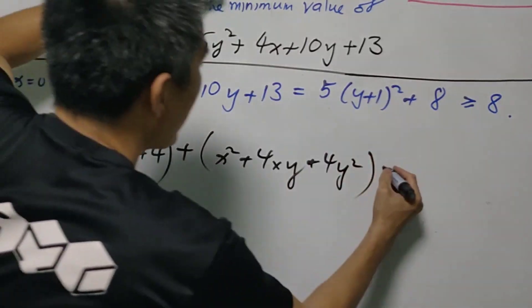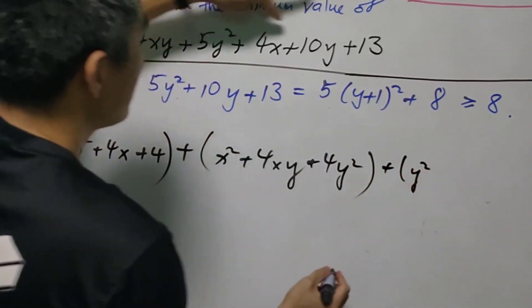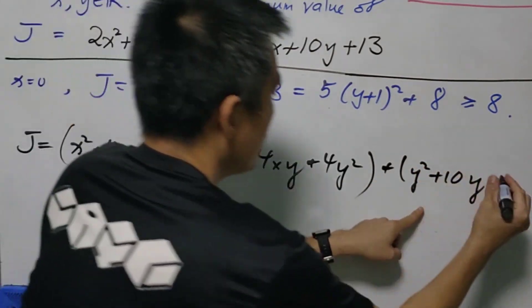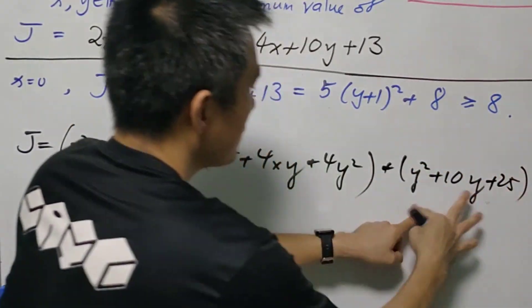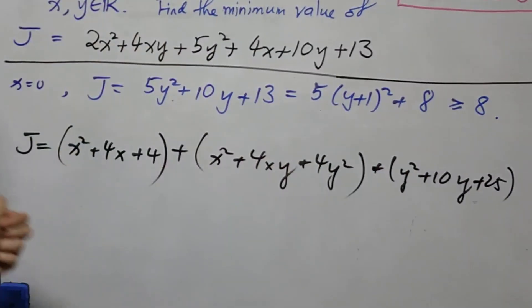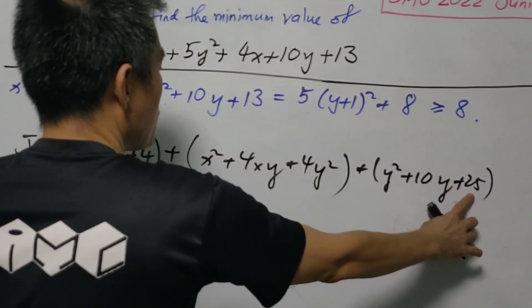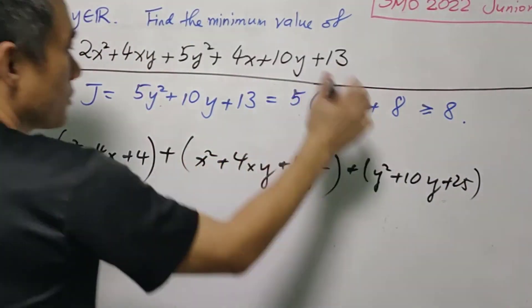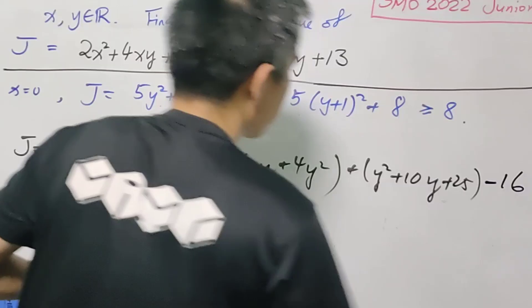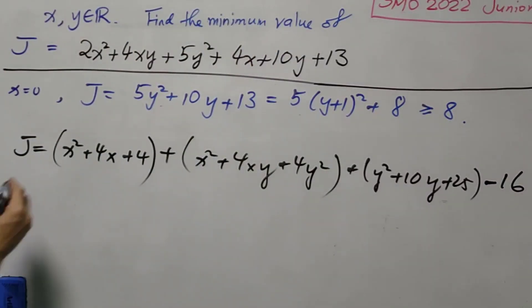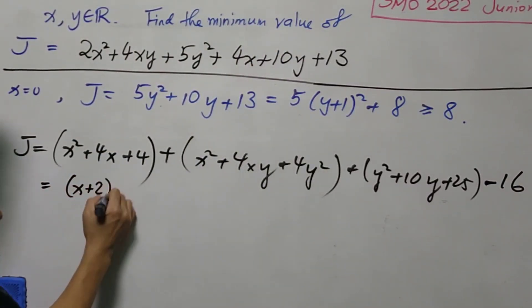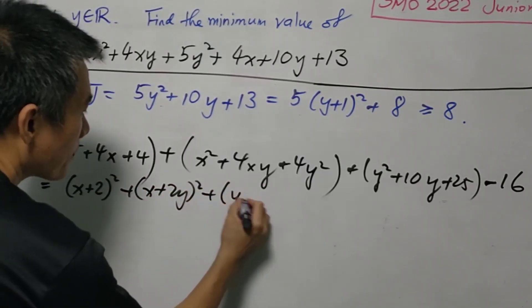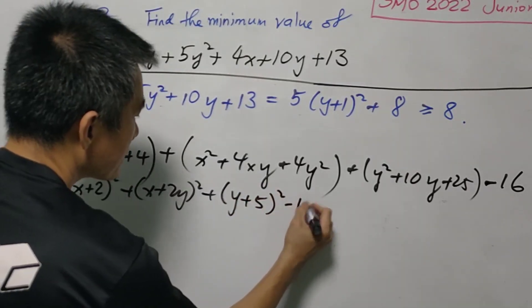We stay left with y squared and we have 10y. Similarly, we need to add 25 so that this can be written as square of y plus 5. So now we have actually this is plus 29 but we need only 13 so we need to minus 16. So as mentioned this can be written as (x plus 2) squared, (x plus 2y) squared, (y plus 5) squared minus 16.